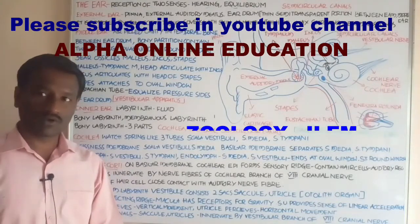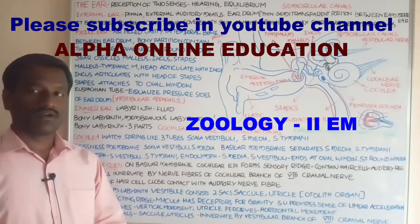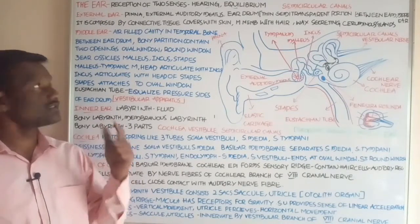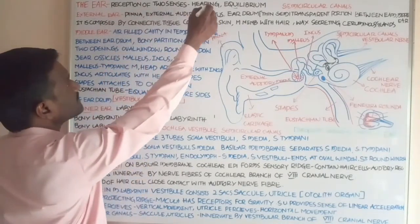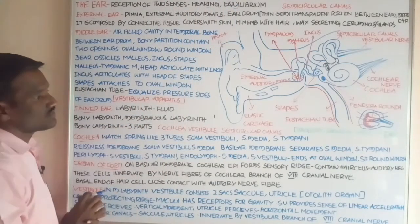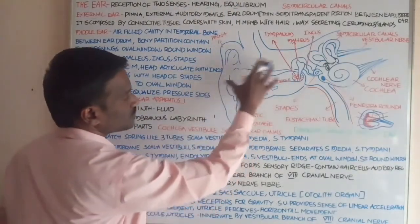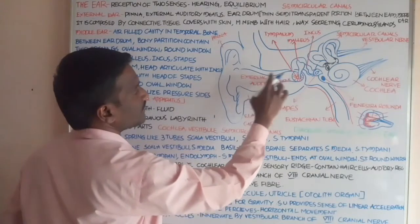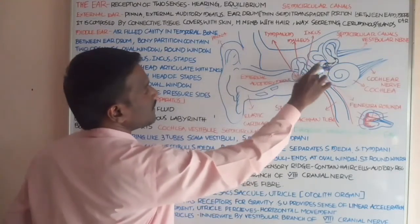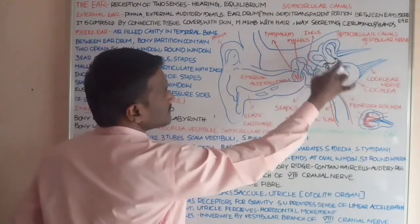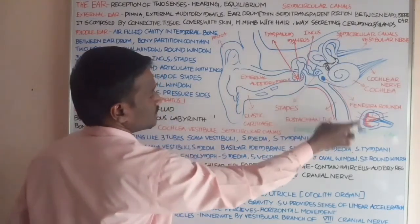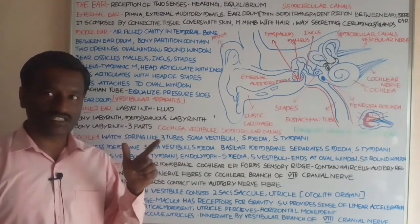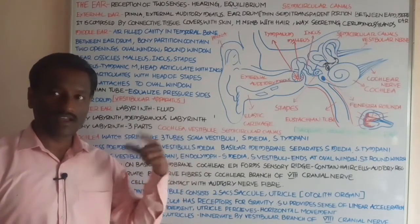The ear is the stato-acoustic receptor. It has reception for two senses: hearing and equilibrium. The parts of the ear divide into three regions: external ear, middle ear, and inner ear.